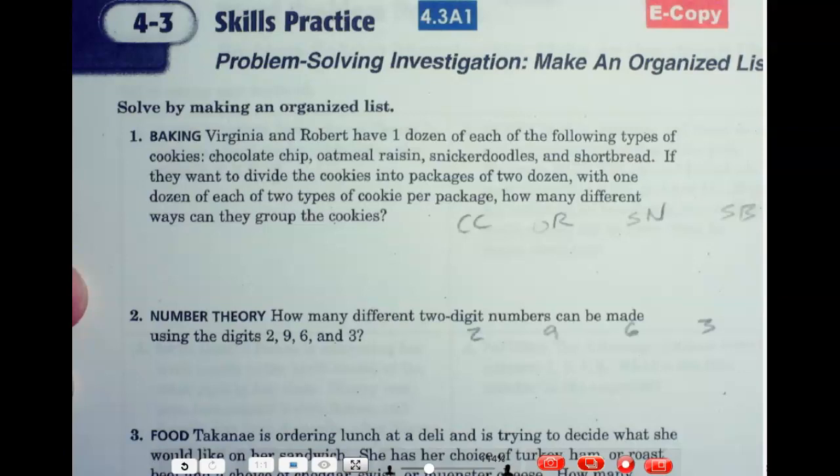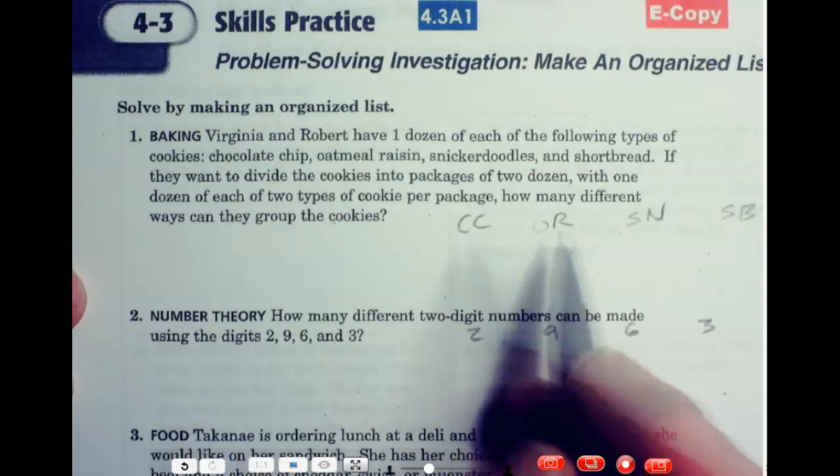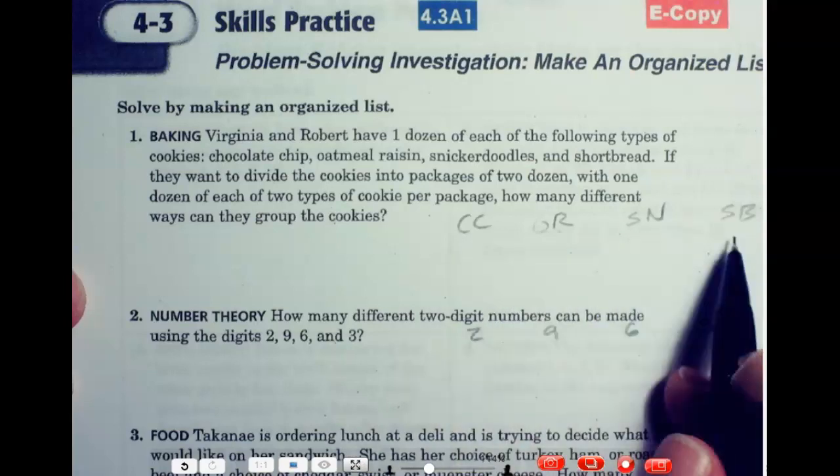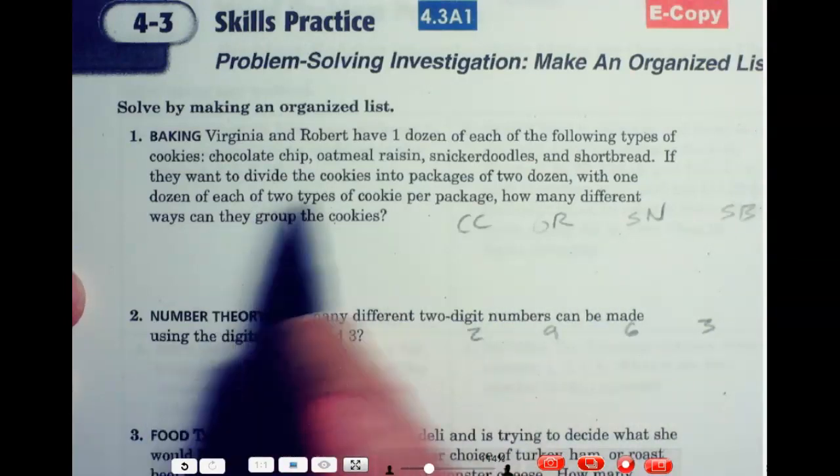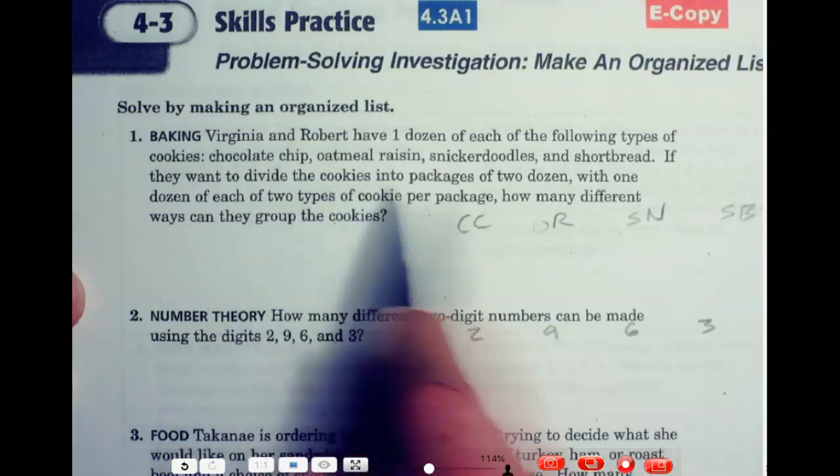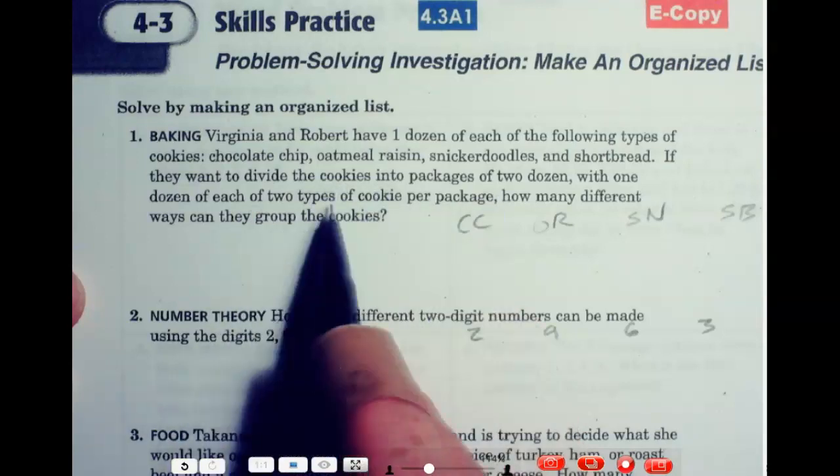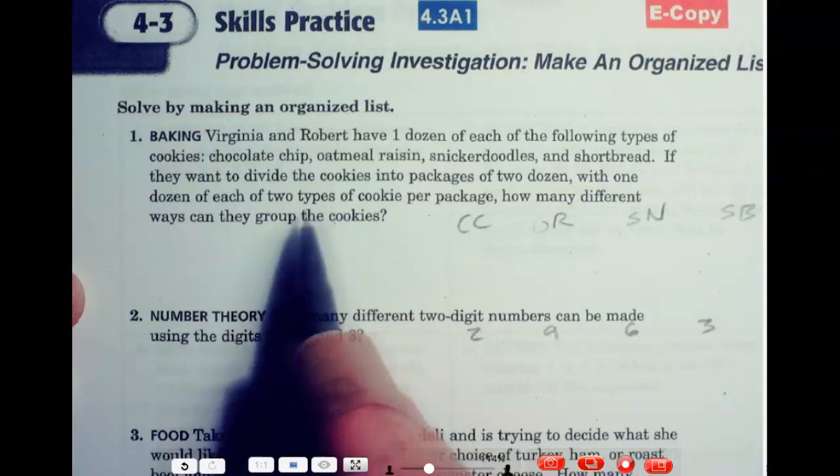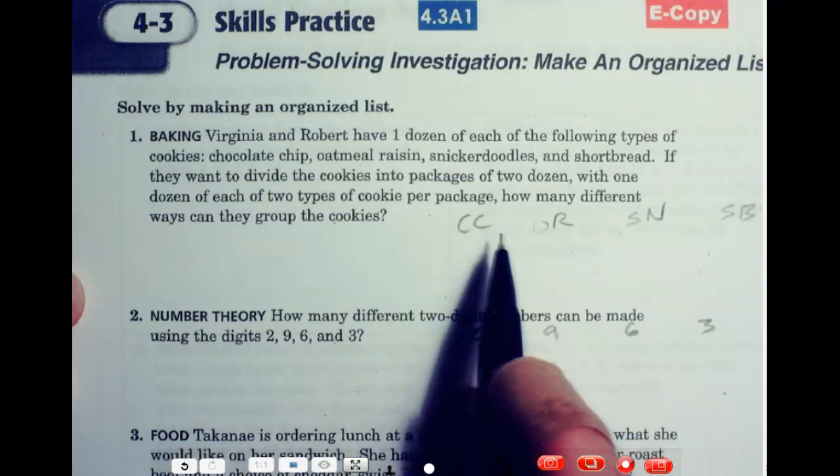Virginia and Robert have a dozen of each of the following types of cookies: chocolate chip, oatmeal raisin, snickerdoodle, and shortbread. If they want to divide the cookies into packages of two dozen with one dozen of each of two types of cookies per package, how many different ways can they group them?